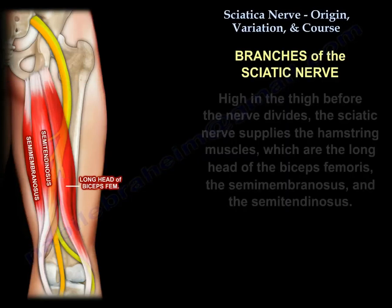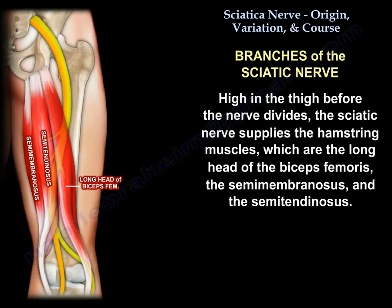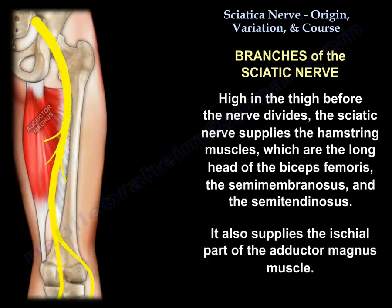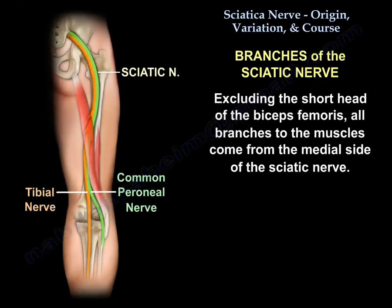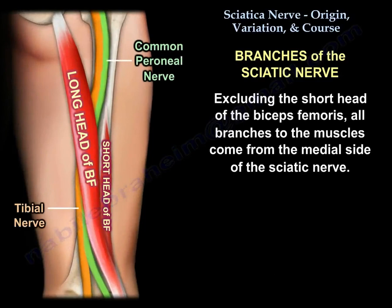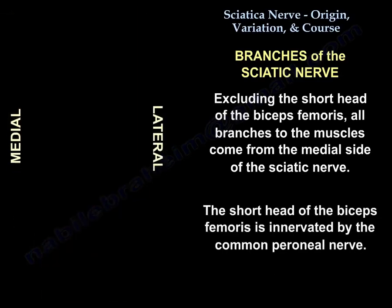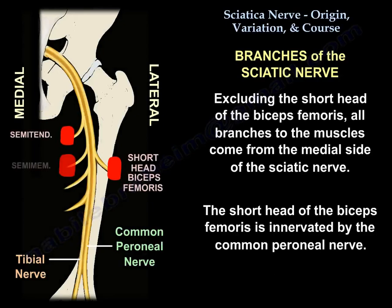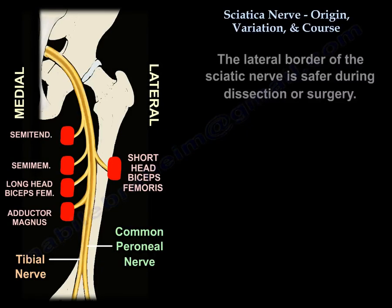High in the thigh, before the nerve divides, the sciatic nerve supplies the hamstring muscles: the long head of the biceps, the semimembranosus, and the semitendinosus. It also supplies the ischial part of the adductor magnus. Except for the nerve to the short head of the biceps, all branches to muscles come from the medial side of the nerve. The short head of the biceps is innervated by the common peroneal nerve. This means the lateral border of the nerve is safer during dissection or surgery.